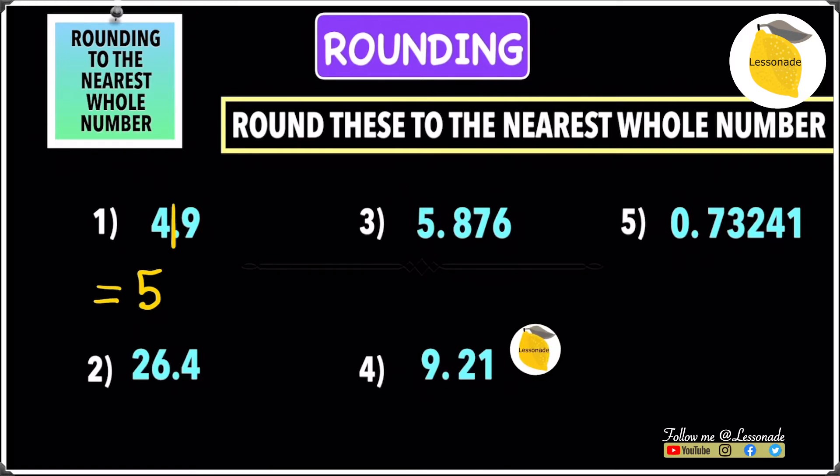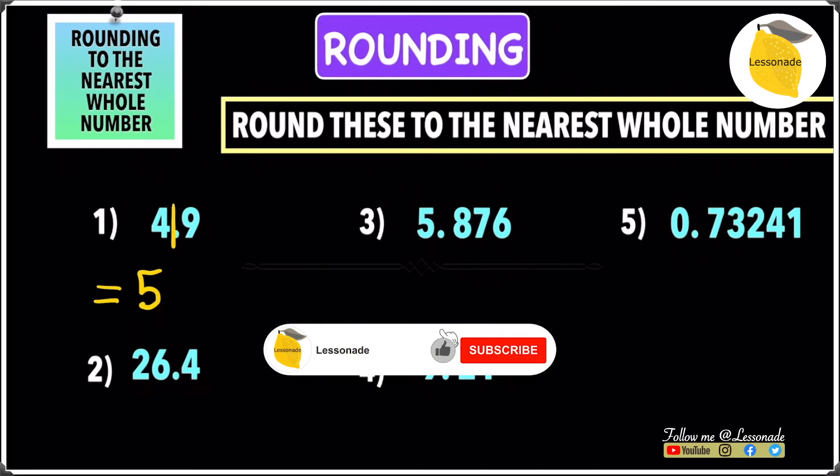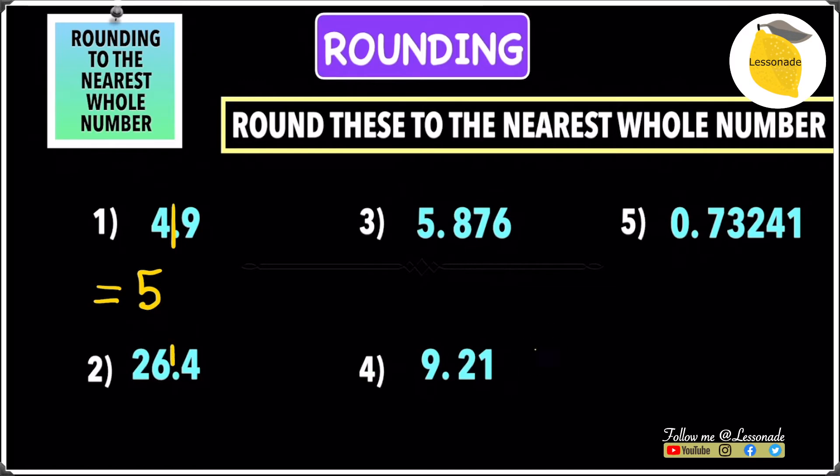The next one is 26.4. Draw a line after the 26 because those are the whole numbers. If the digit after the line is 5 or above... it's below 5, which means you're going to round down or keep the number as it is.